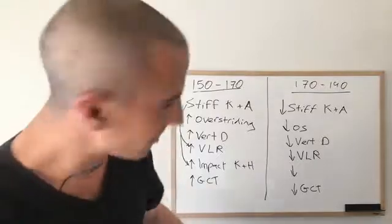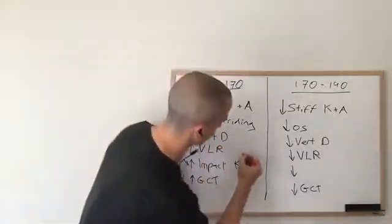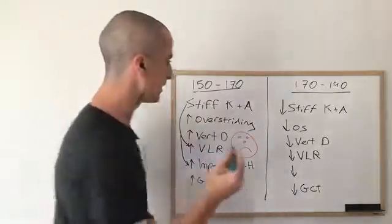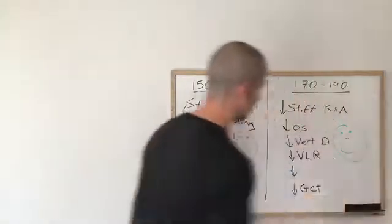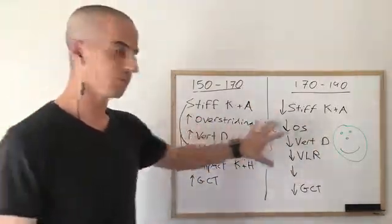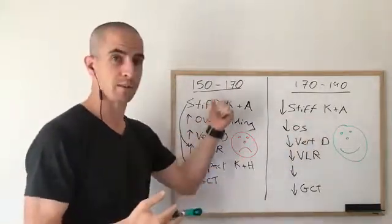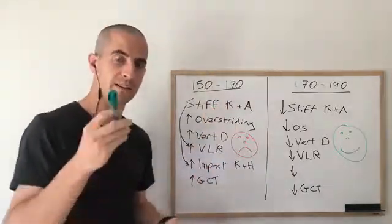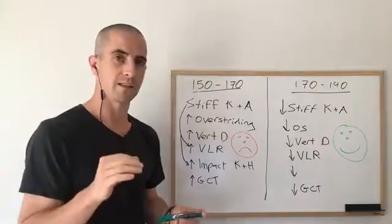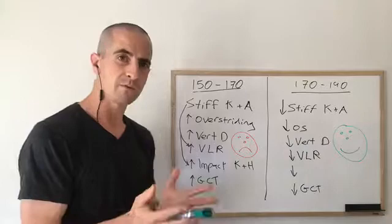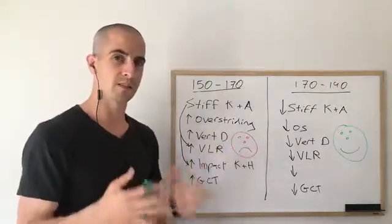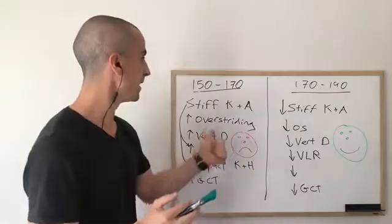To sum it up visually: I call 150 to 170 the 'unhappy zone' of running cadence, and 170 to 190 the 'happy zone' of running cadence. If you don't know your cadence, you're probably in the unhappy zone because 8 out of 10 runners are. In the description I've linked the blog about that research study and all this biomechanical detail, and also a blog called 'How to Use Cadence to Prevent Running Injuries,' which talks about how to measure your own cadence and how to work on it if you find yourself in the unhappy zone.